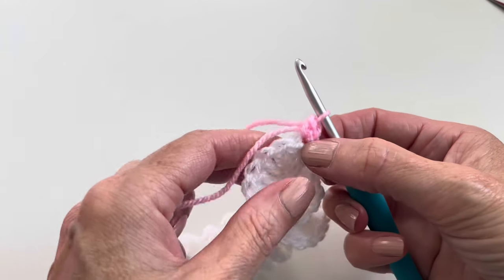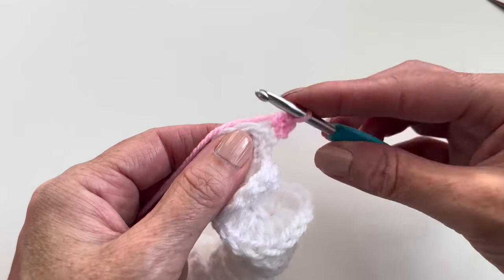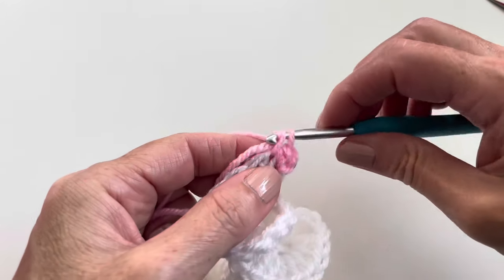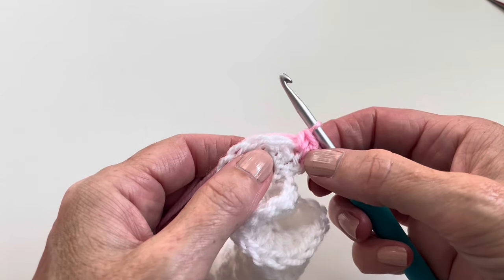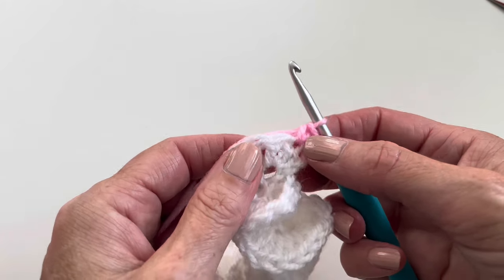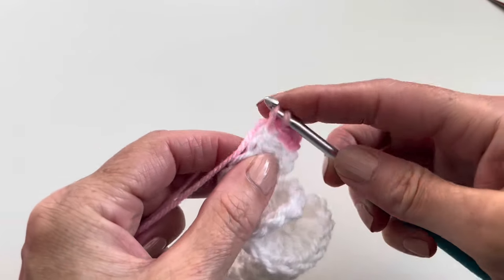I will pull my yarn to tighten, and now in the second stitch I will make one single crochet. And now in the third stitch I will make one single crochet.